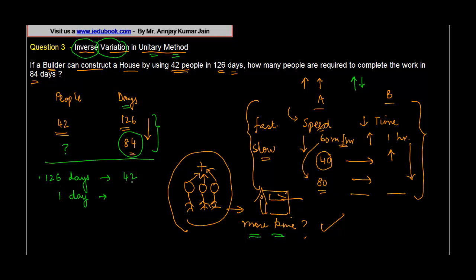How many people will be required? Obviously the number of days is getting reduced, so the number of people required is bound to increase. And how do you increase? You do the increase by multiplication. So we will require 42 into 126 men or people to complete the work in one day.